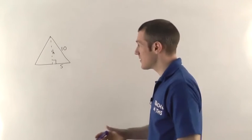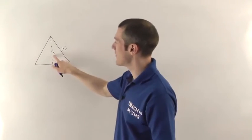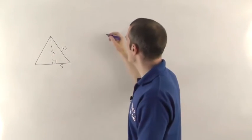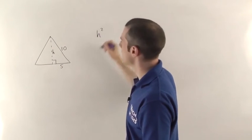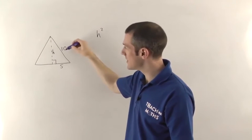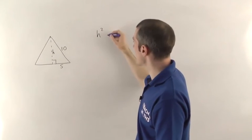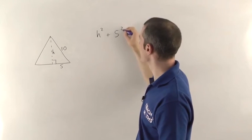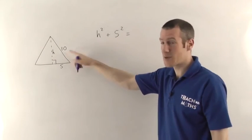So now we can use Pythagoras' theorem just as before, except we're going to have an h instead of an x. So h squared, now this is one of the shorter sides. The longest side opposite the right angle is the 10. So the h squared plus the 5 squared will give us the 10 squared.